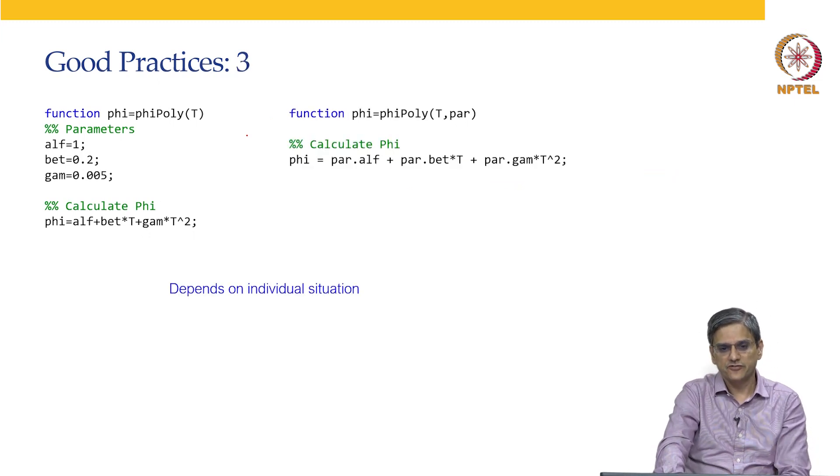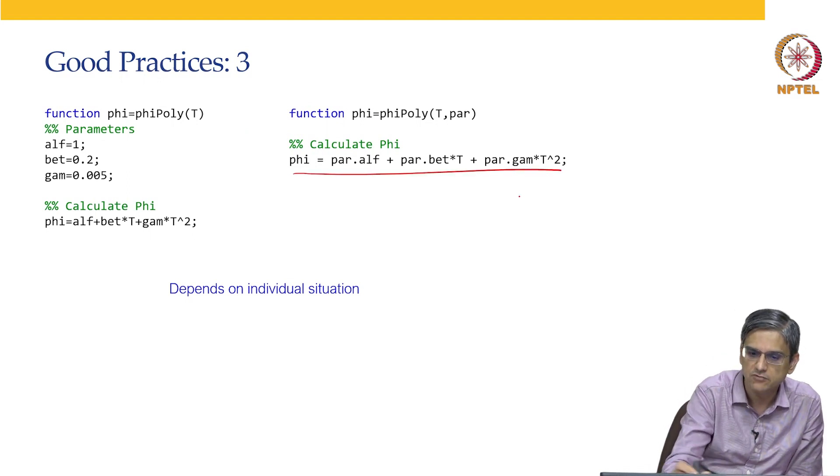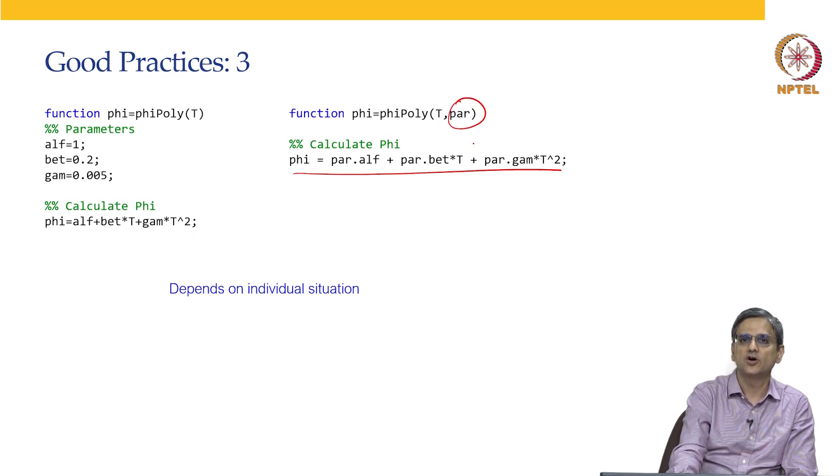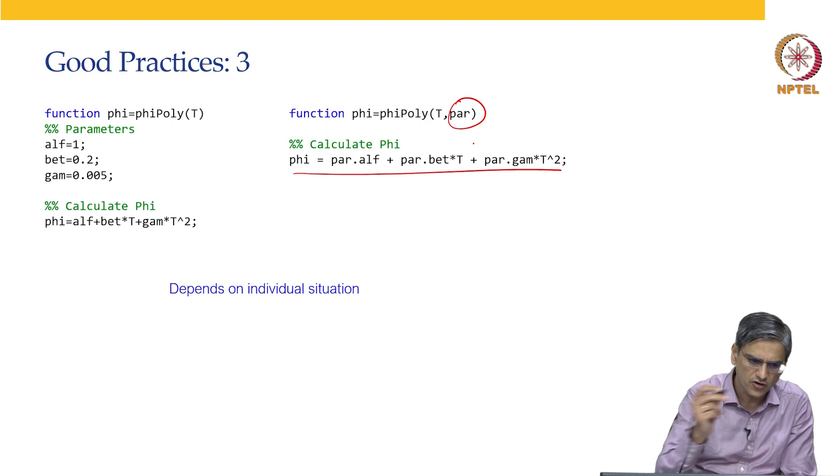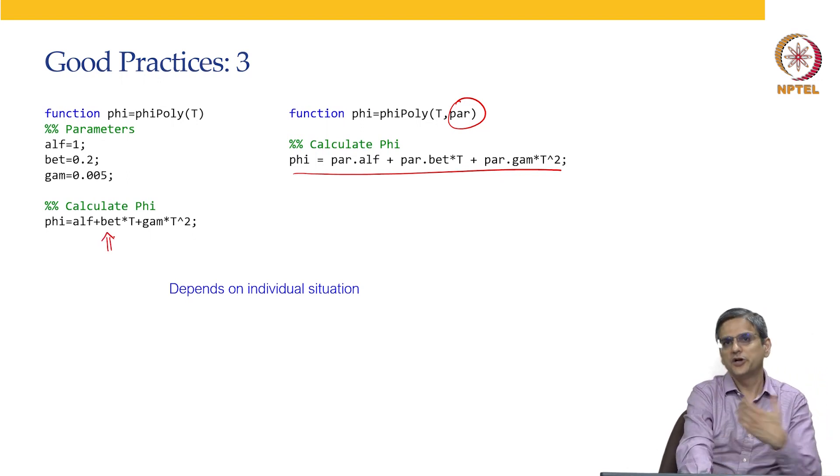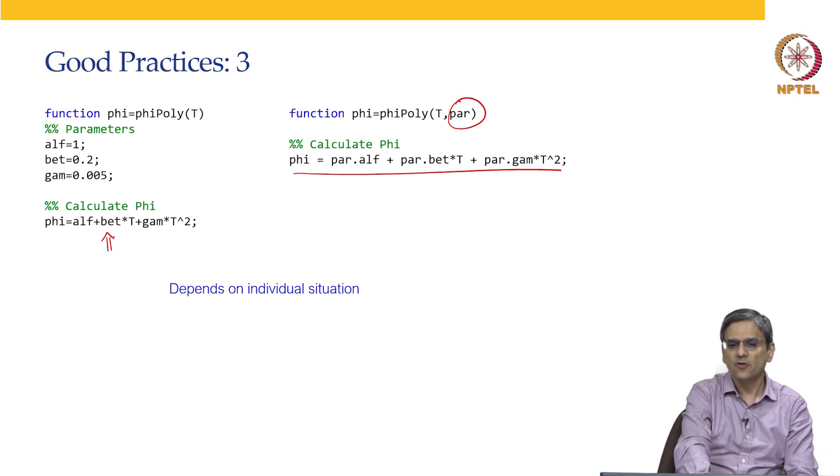What is the third way of coding? The third way of coding was using phi equal to this by passing on the parameter as one of the variable or input arguments. Now, this depends on individual situation. For example, if you want to do this for one particular type of problems, the left hand side method is what you will use. But now, where is this particular thing used? Phi can be for example, your specific heat.